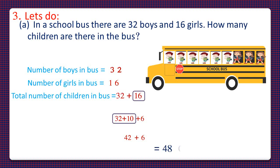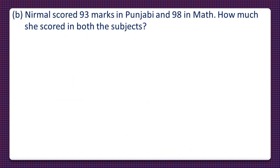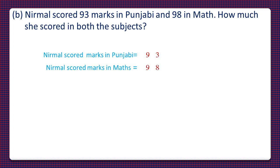So the total 48 children are there in the bus. Now question number 3, Part B: Nirmal scored 93 marks in Punjabi and 98 in Math. How much did she score in both the subjects? So Nirmal scored marks in Punjabi is equal to 93. We have to find Nirmal's marks in both subjects, so let's add the marks: 93 plus 98.